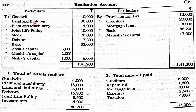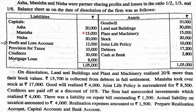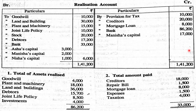The realization account is debited with: Goodwill 10,000; Land and Building 30,000; Plant and Machinery 15,000; Joint Life Policy 10,000; Stock 20,000; Debtors 17,200 — same original values. These asset accounts are now closed and transferred to the realization account.